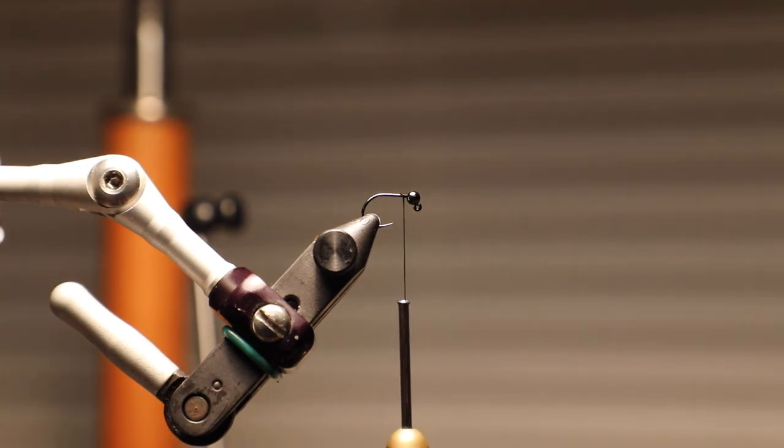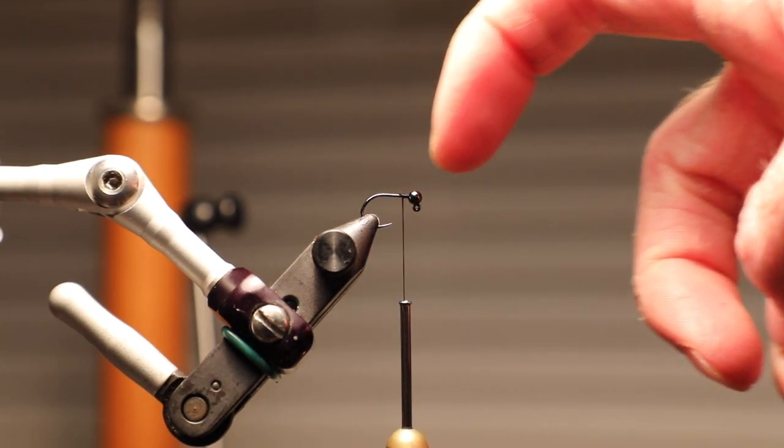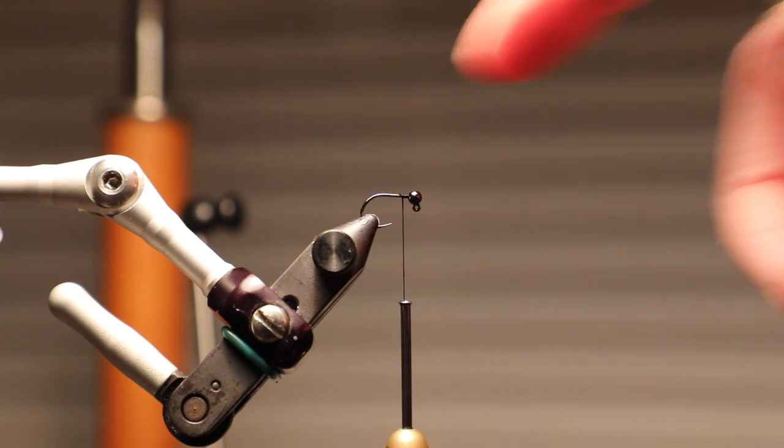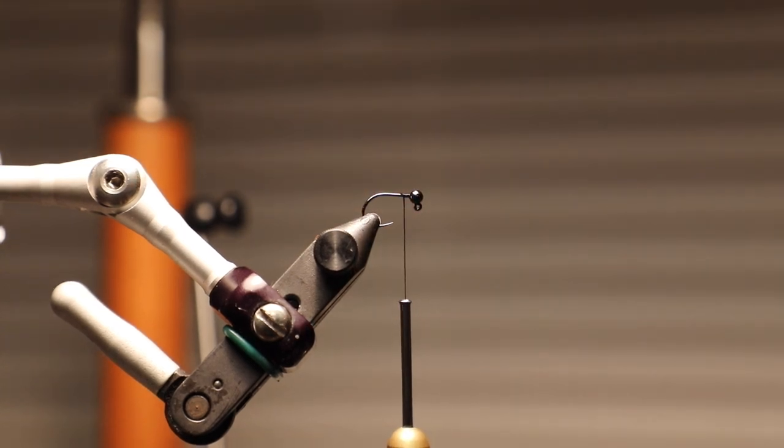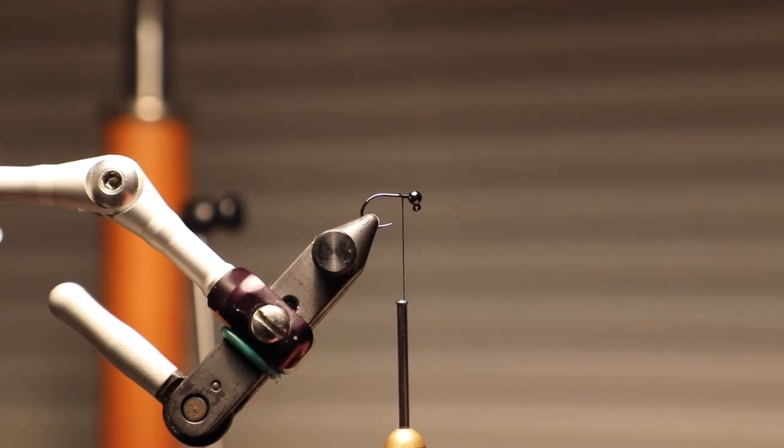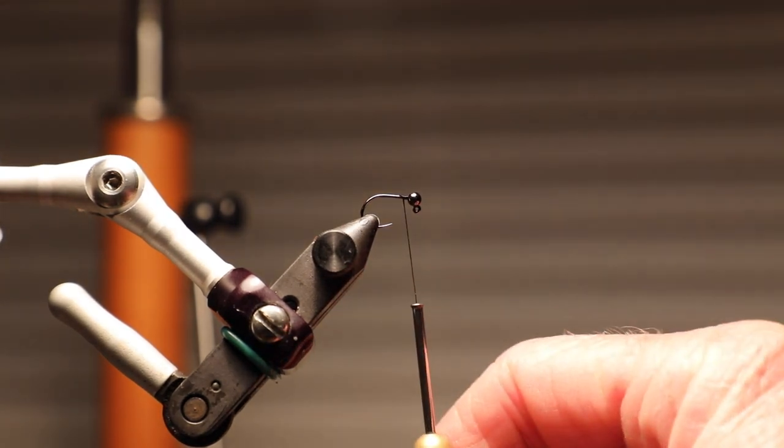We're gonna do this on a jig hook. You can see I've got a black bead and I think this is a size 16 jig hook. Just using some basic black 6-0 thread.